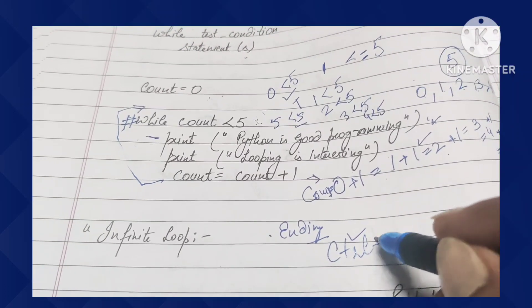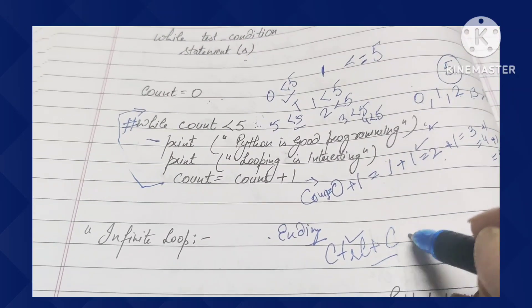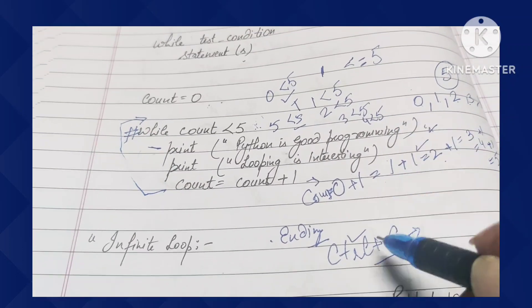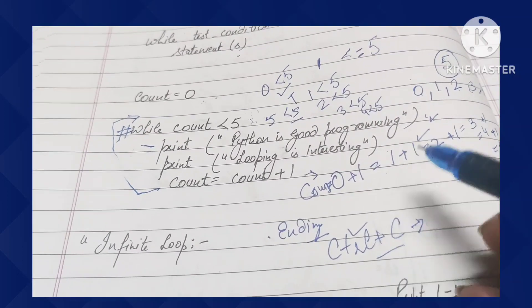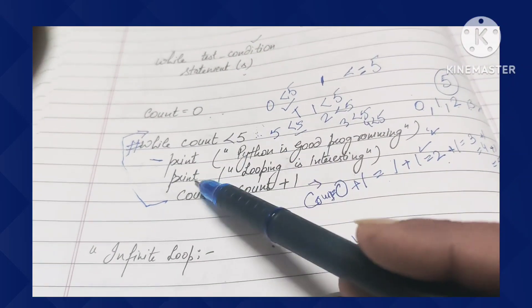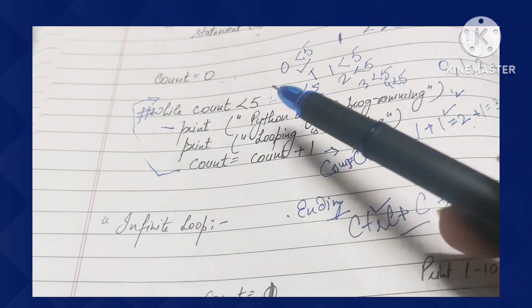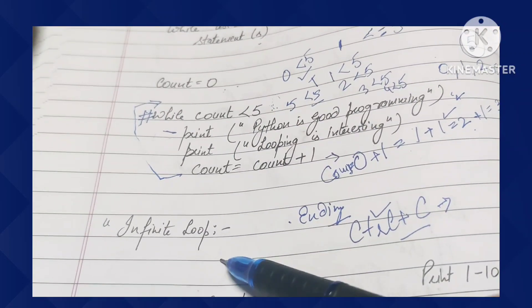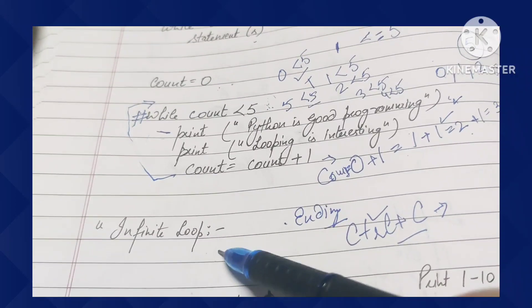To come out of infinite loop, you have to press Control plus C. When you press that, automatically all the looping hindrance and stuck condition will be released, and control will come out. This is also called endless loop. Sometimes students make mistakes and enter into this.